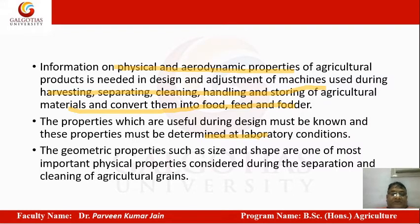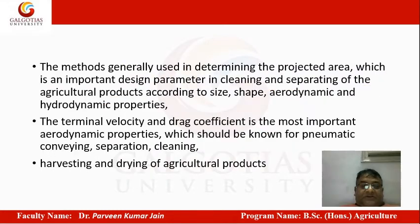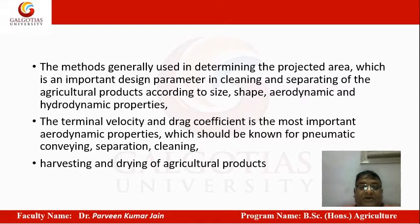Geometric properties such as size and shape are among the important physical properties considered for the separation and cleaning of agricultural grains. The method generally used determines the projected area, which is an important design parameter in cleaning and separating agricultural produce according to size, shape, and aerodynamic and hydrodynamic properties.